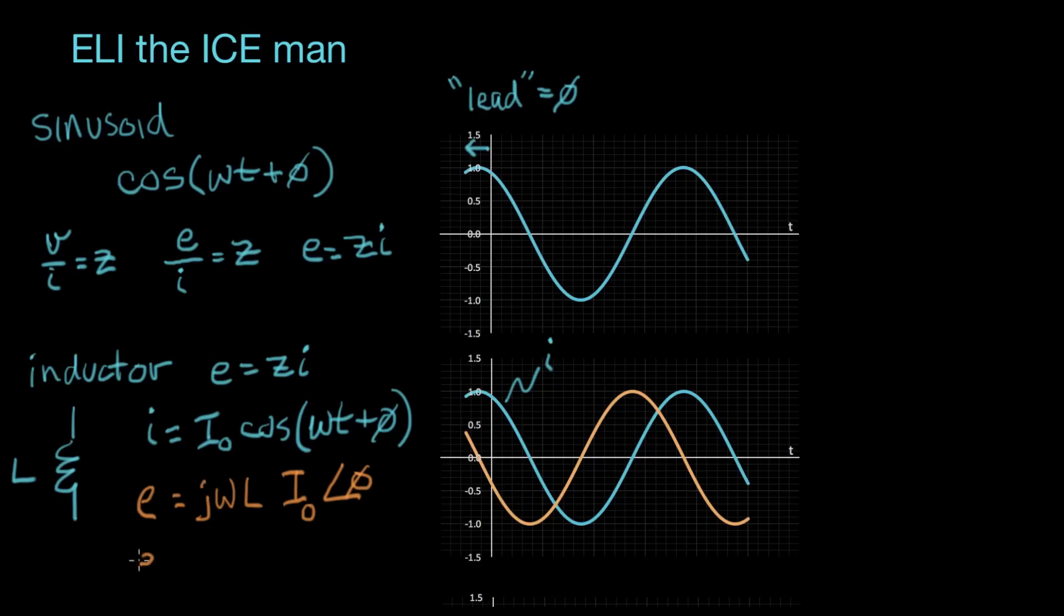And so I can write this as E equals, let's put the scaling factor out there, and we'll have I naught, which is the original magnitude of the current. And phi gets changed here, phi changes. Phi becomes phi. And this multiplication by J here corresponds to adding 90 degrees to phi.